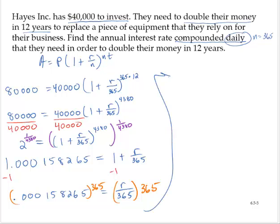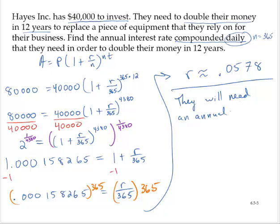So r is approximately 0.0578. Now, this is a rate. And we usually report rates as a percentage. So conclusion, they will need an annual interest rate of 5.78% to double the investment in 12 years.